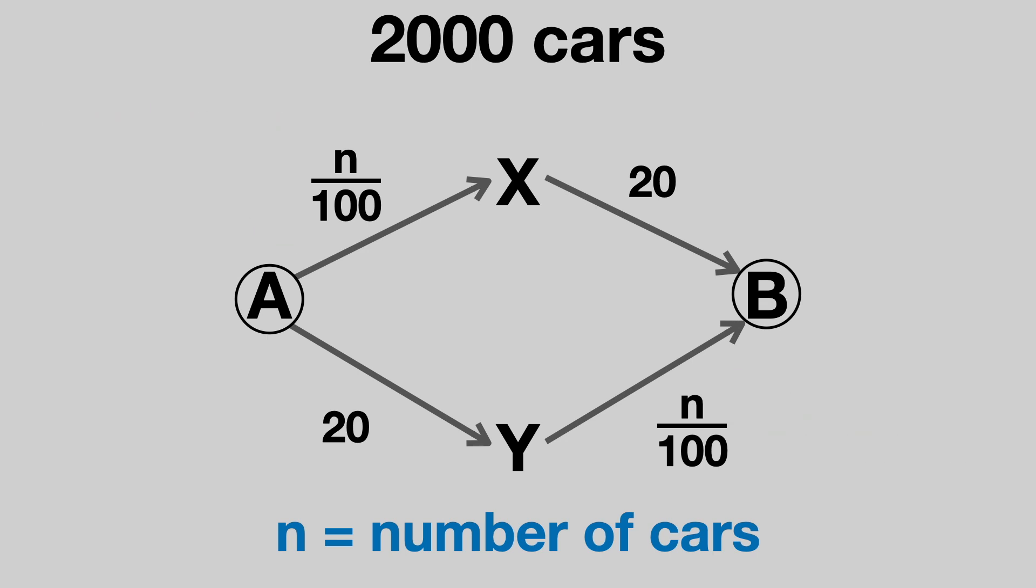In this situation, the two routes are equally appealing to drivers. Our 2,000 cars will split evenly between the roads, so 1,000 go each way. Why is this? Well, imagine that the drivers did not split equally, and more cars went on route A-X-B.